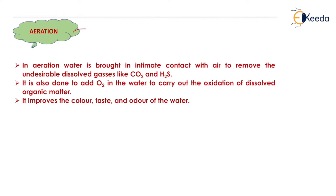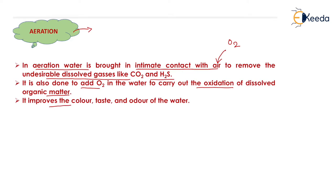The next process is aeration. Why do we need to aerate the water? To carry out the oxidation of dissolved organic matter. If we carry out the oxidation before the plain sedimentation tank, the efficiency of the plain sedimentation tank will increase. In aeration, water is brought into intimate contact with air, to remove undesirable dissolved gases like CO₂ and H₂S. It is also done to add oxygen in the water to carry out the oxidation of dissolved organic matter. Aeration improves the color, taste, and odor of the water.